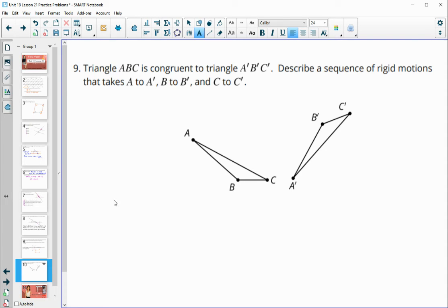Then number nine says that we have triangle ABC is congruent to A prime, B prime, C prime. Describe a sequence of rigid motions. They aren't touching each other. So we're going to need to translate ABC by directed segment and then get two points together. So I like to do alphabetical. So A to A prime.